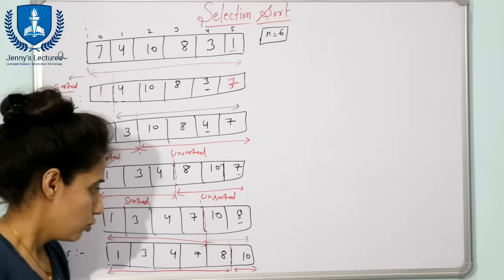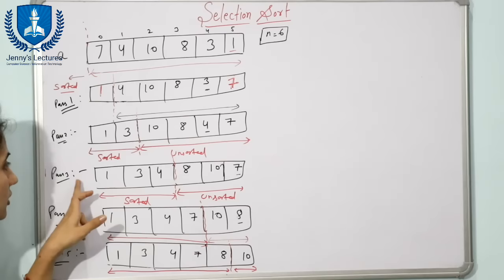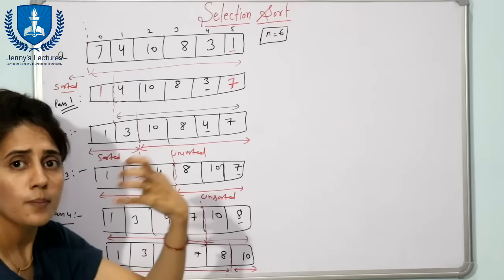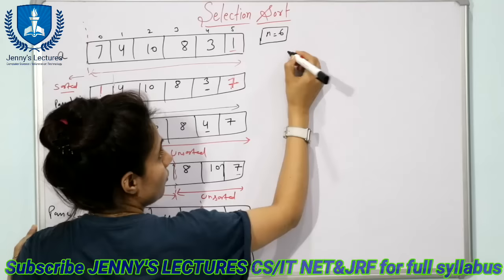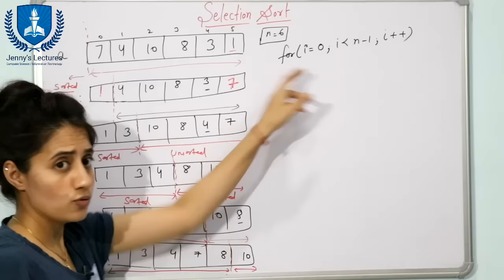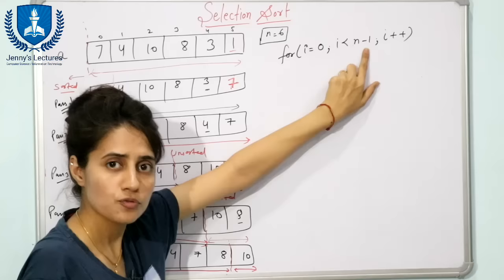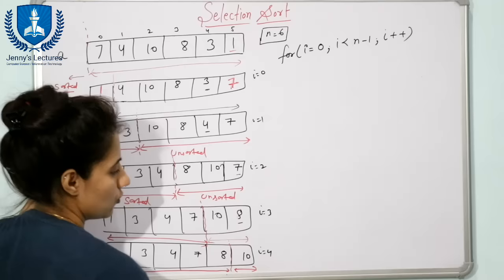Now how to write this into code. There will be two loops. One is for the passes — 5 passes means n minus 1. So the outer loop goes from i = 0 to less than n minus 1, with i++. In pass 1 i = 0, pass 2 i = 1, pass 3 i = 2, pass 4 i = 3, pass 5 i = 4. That is why we write less than n minus 1.